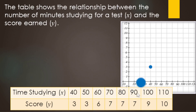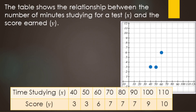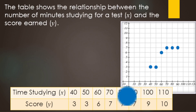60 minutes goes with a score of 6. This is off a 10-point test. 70 goes with a score of 7, 80 goes with a score of 7, 90 goes with a score of 7. 100 minutes goes with a score of 9. And then 110 minutes goes with a score of 10. There's our scatter plot.